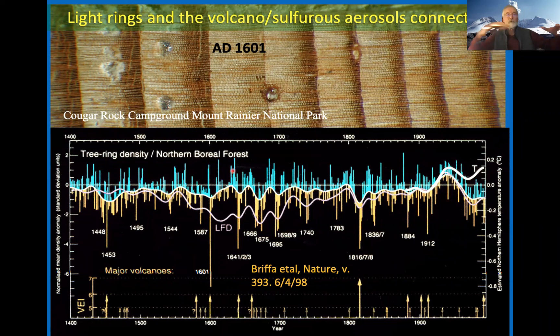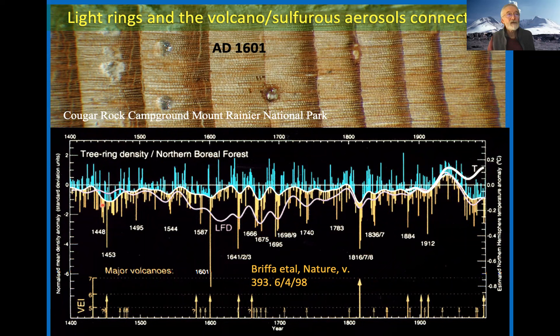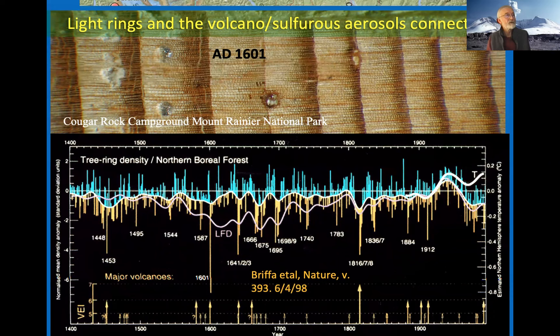Volcanic eruptions release sulfurous aerosols that spread around the atmosphere, reflect solar radiation, increase Earth's albedo, and lower the planet's temperature for a year or two. Many of these cold events caused widespread famines because farming was impossible. I use these light rings to date buried trees—I was successful in dating the Mount Hood eruption of 1781 using the 1601 ring as a marker.